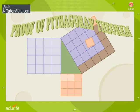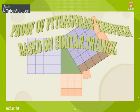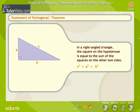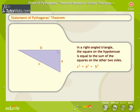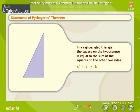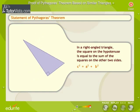Proof of Pythagoras Theorem based on similar triangles. In a right-angled triangle, the square on the hypotenuse is equal to the sum of the squares on the other two sides.